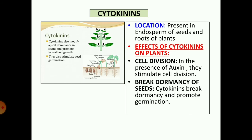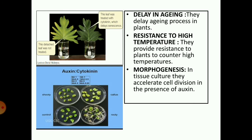Cytokinins are the next very important hormone in plants. They are found in the endosperm of seeds and roots of plants, from where they migrate upwards. Effects of cytokinins: cell division — in the presence of auxins they stimulate cell division. They break dormancy and promote germination in seeds. Delayed aging is a very important feature of cytokinins — they delay the aging process in plants. In a figure showing two glasses, one with only water and one with water containing cytokinin, the aging in the second is less than the first. They also provide resistance to plants against high temperatures. In tissue culture, they accelerate cell division in the presence of auxins — this is called morphogenesis.